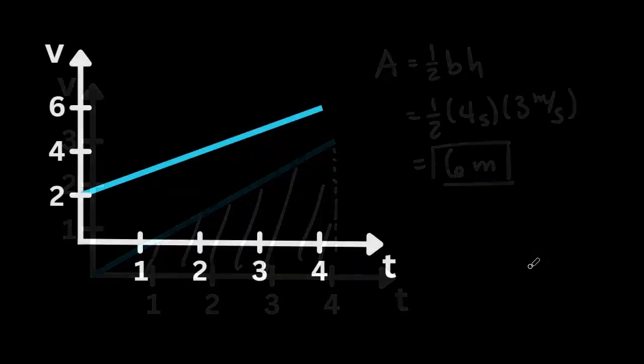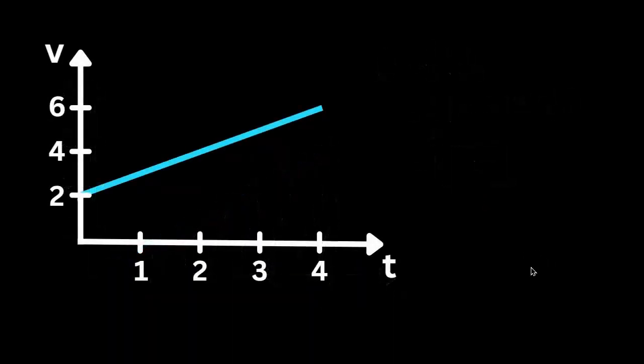Now we have an object that starts at 2 meters per second and increases in velocity over the 4 seconds to 6 meters per second. And we want to find the displacement of this object.